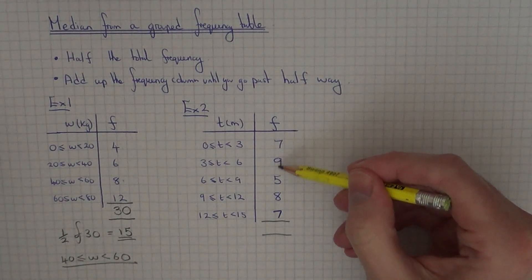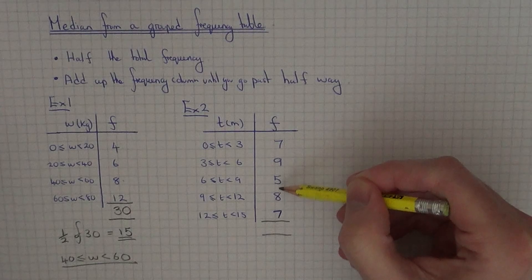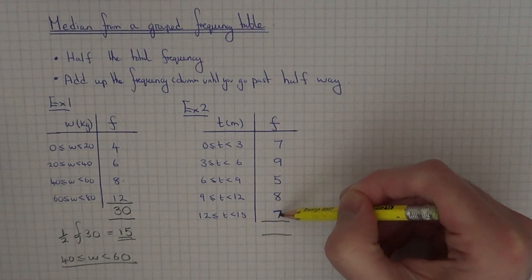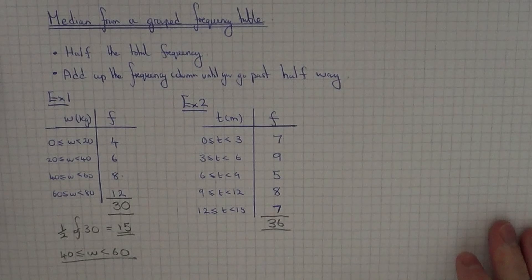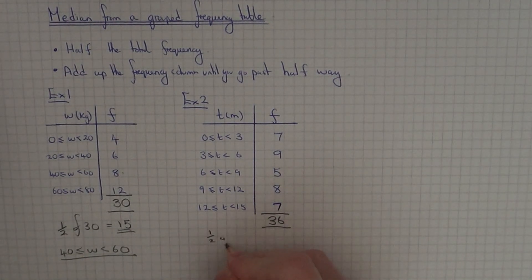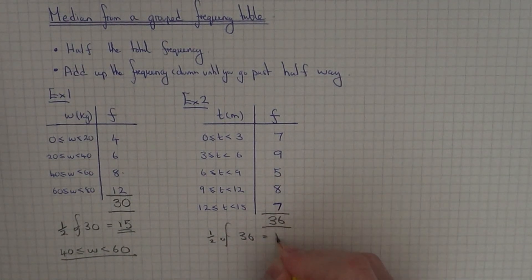We've got 7 add 9 is 16, add 5 is 21, add 8 is 29, add 7 is 36. So if we find half of 36 that is 18.